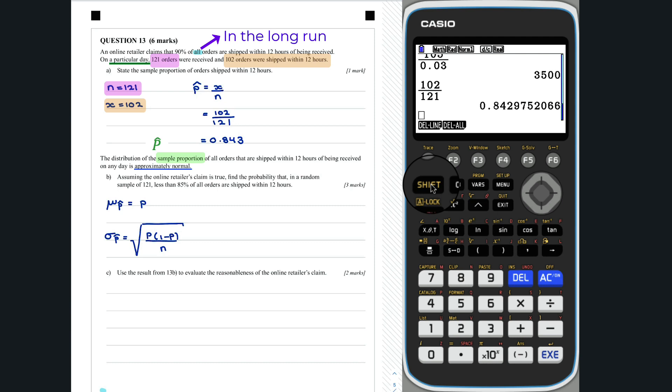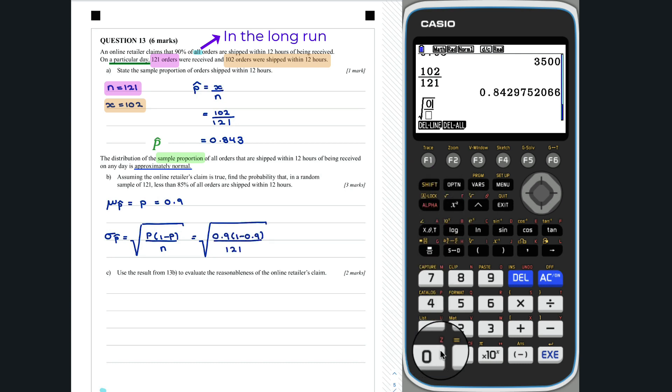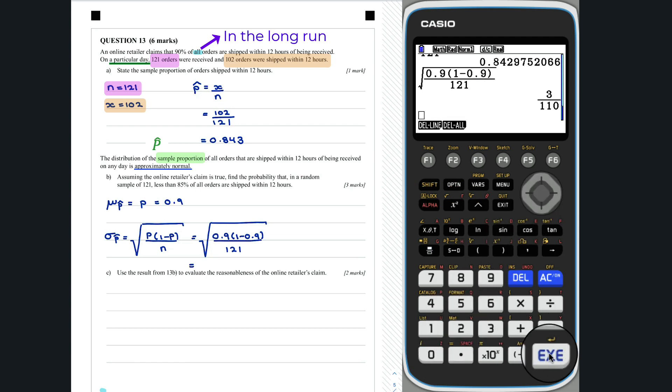If we assume the online retailer's claim is true, mu of p hat is equal to 0.9 and sigma of p hat is equal to... We now need to determine the probability that capital p hat is less than 0.85.